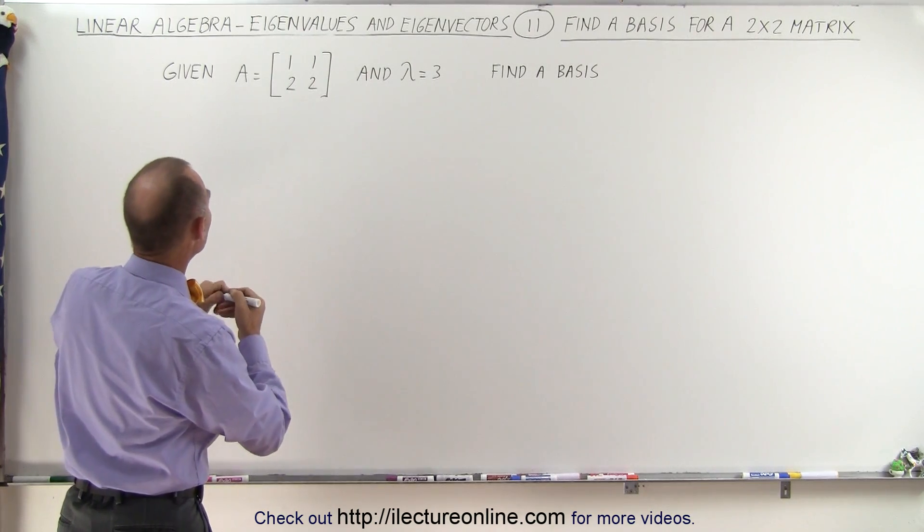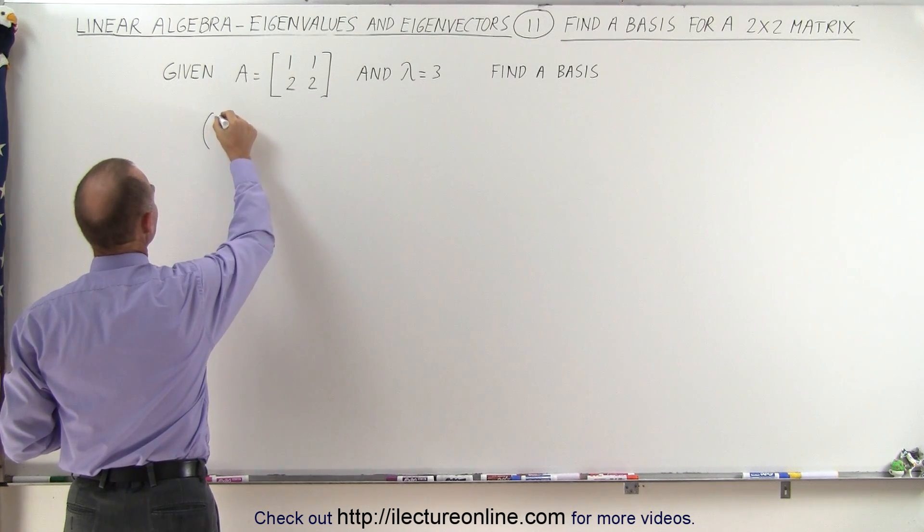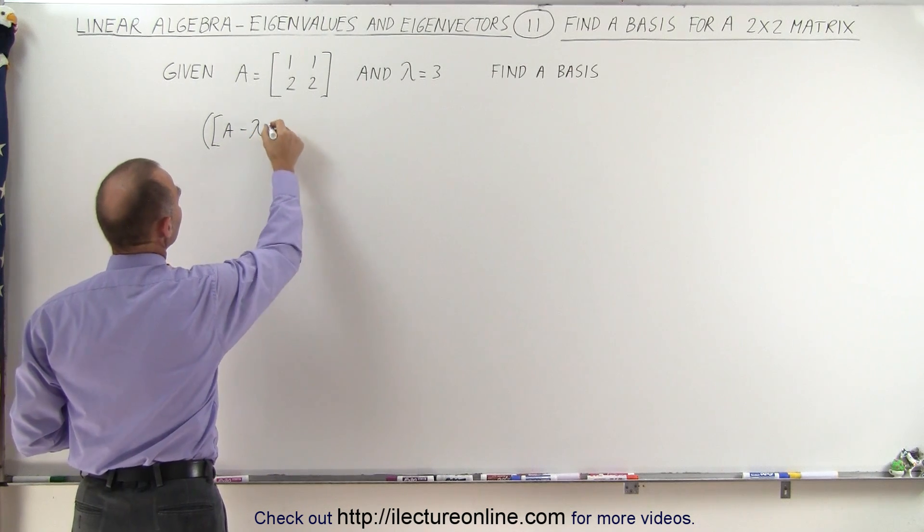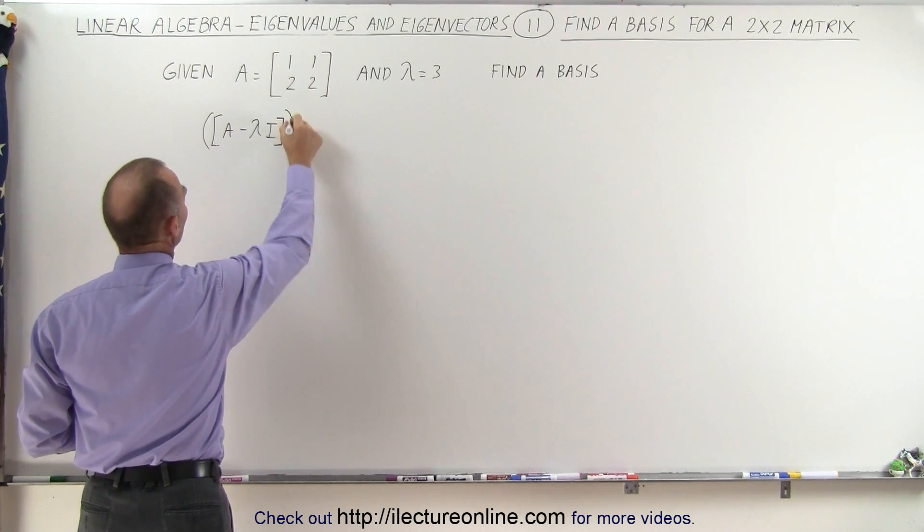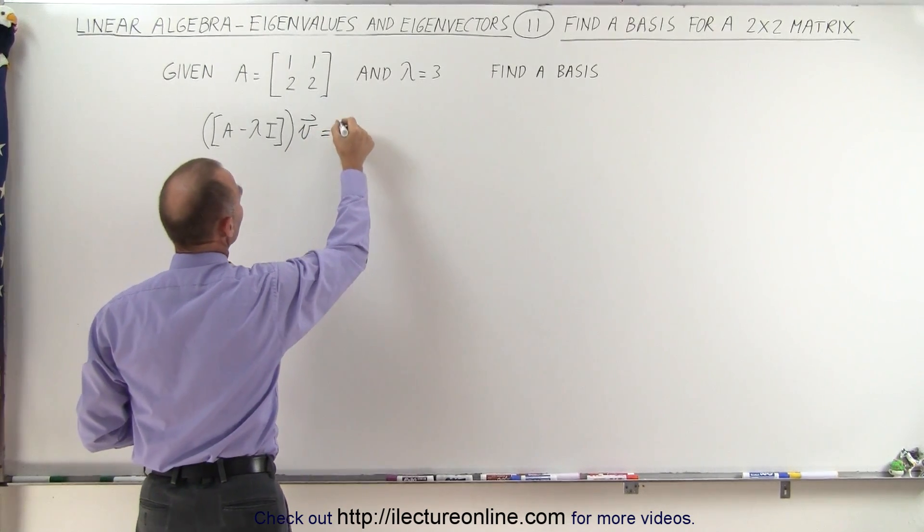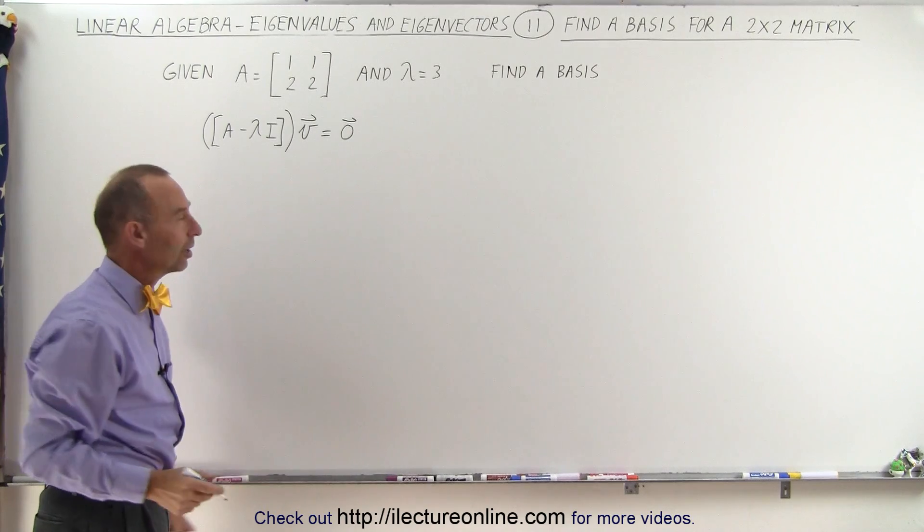Well to do that, we have to do the following. We have to find the eigenvector, which can be found by taking the matrix A minus the eigenvalue times identity matrix, multiply it times the eigenvector, and that should give us the null vector, or the zero vector.